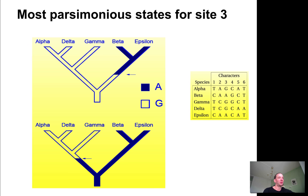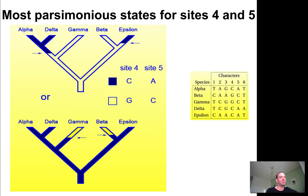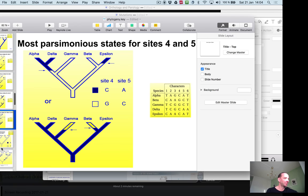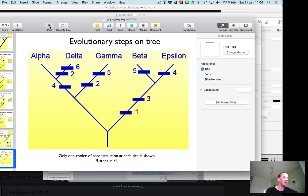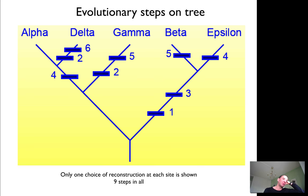You keep doing that for sites 3, 4, and 5. You end up with the most parsimonious state—a total of nine mutations that have occurred. Of course, you can in principle generate many different trees and pick the best one. If you have a small number of species, you could go through all possible trees. The most parsimonious state is explained by the fewest number of mutations.